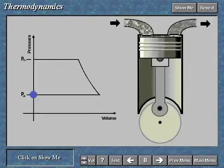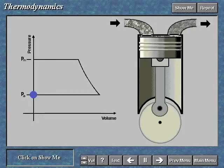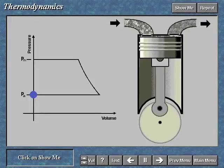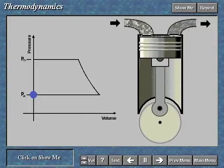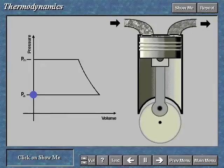Basic compressor operation corresponds with the ideal cycle pressure volume diagram. Click on Show Me to compare the two diagrams. When you are finished, click on the right arrow.